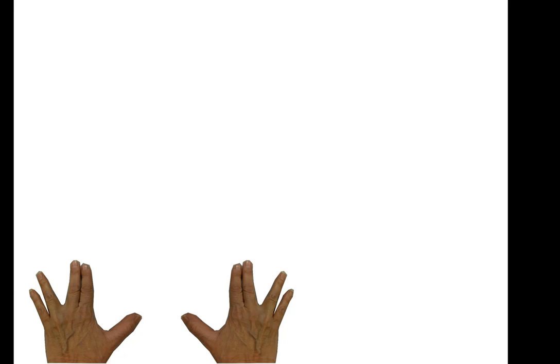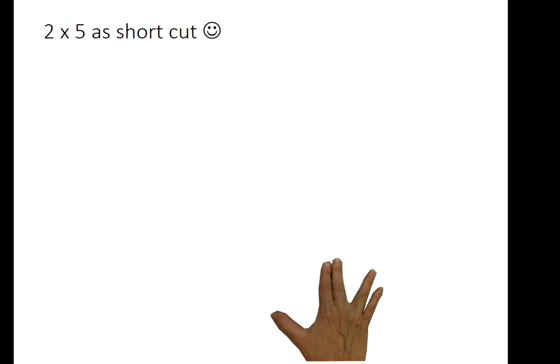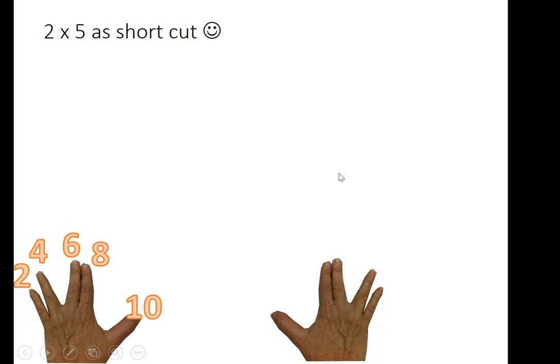And two times five is memorable. Two, four, six, eight, ten. Two times five is ten. We can use that as a shortcut to figure out the bigger ones. For two times six, two times five is ten. The next one is twelve. Two times six is twelve.